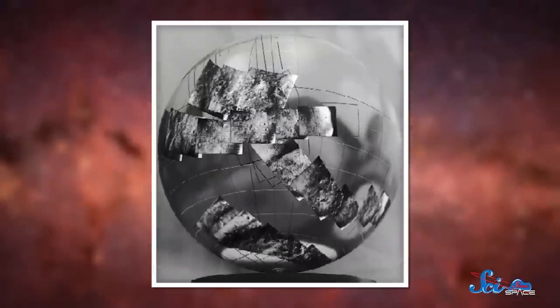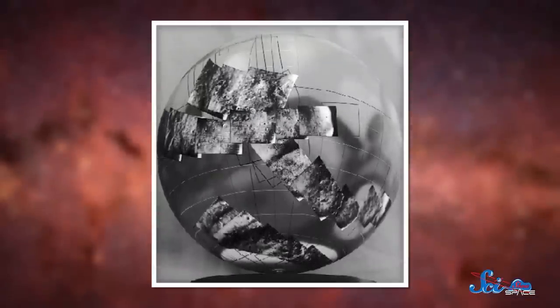Sending two probes together was so useful that NASA did this for other exploration missions, too, like the Voyager trips to Jupiter and Saturn. Still, even with the one-two punch model, Mariner 6 and 7 only managed to image about 20% of the Martian surface.